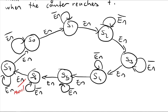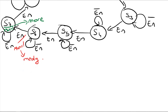For the Moore output, whenever I am in state s7, max is 1. So this is the Moore approach. We can also draw our state table to find our next state logic and output logic.